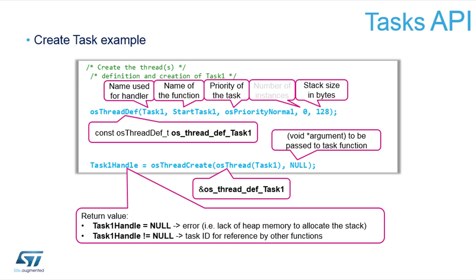When you want to create the task, instantiate it in the heap, and put it into the scheduler, you call the function OS thread create. You can see that task one is wrapped by a macro OS thread, which takes task one and adds the prefix and the pointer — effectively passing the pointer to the local variable created by OS thread def. The second parameter is the initialization value passed to the task. When you create it, the creation of the task will return a thread ID, and you can store it in a handle that can be used when calling thread-related functions.